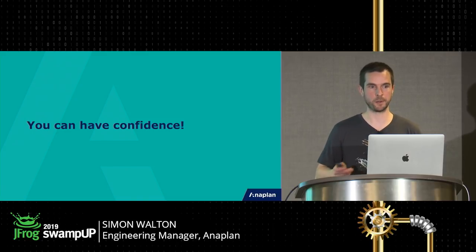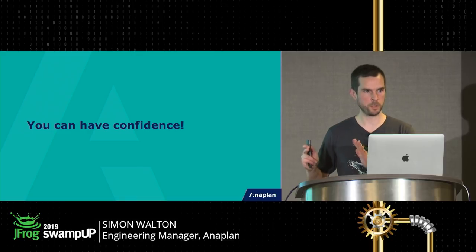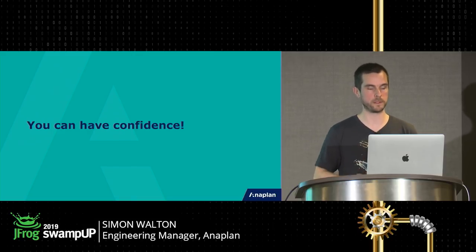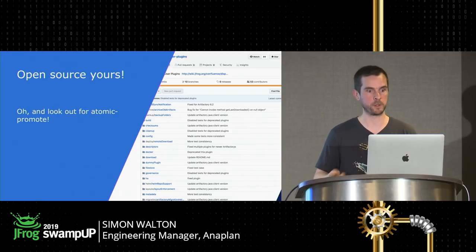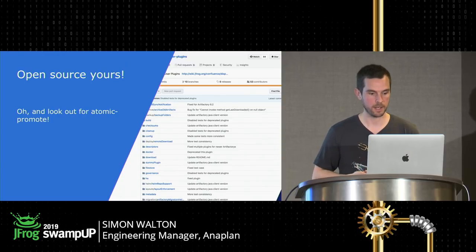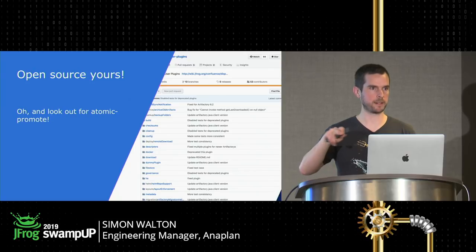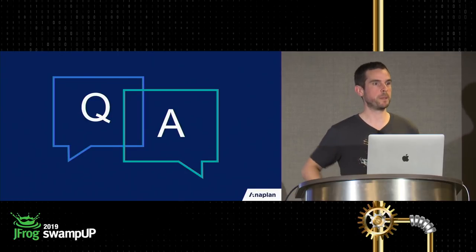For complete confidence you'd want to put this into your staging environment — particularly if you're upgrading Artifactory, you'd want to know if the plugin behaves correctly in the next version. But at least you know the plugin is logically behaving as you want it to. If you do write a plugin, I encourage you to open source it — that's how we all learn from each other. Look out for Atomic Promote: I'm working on getting it open-sourced at Anaplan, and it should be available pretty soon at github.com/anaplan-inc. Thanks very much everyone.